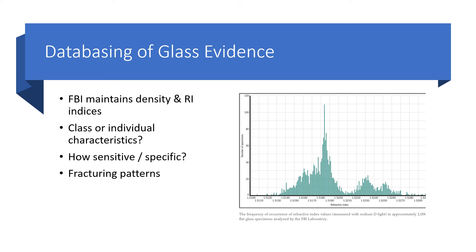These are all coming from mass-manufactured products — glasses, paints, cars. You're not getting a bespoke car. These databases can be very sensitive and very specific. But we need to take pains that whatever techniques we use aren't so sensitive and specific that they'll artificially determine that two different samples come from two different panes of glass when maybe they came from one.